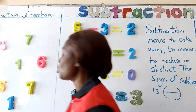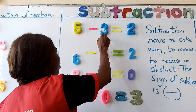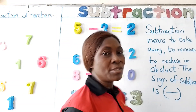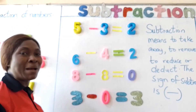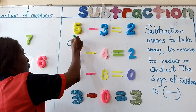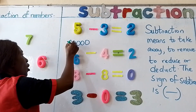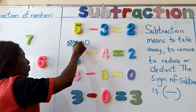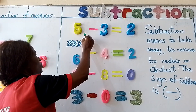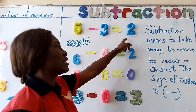Now let's look at what we have on the board. Five take away three. You can use your counters as well, but I'm going to make use of my counters on the board. Five take away three — one, two, three. How many do I have left? One, two. That is how I arrive at my answer of two.